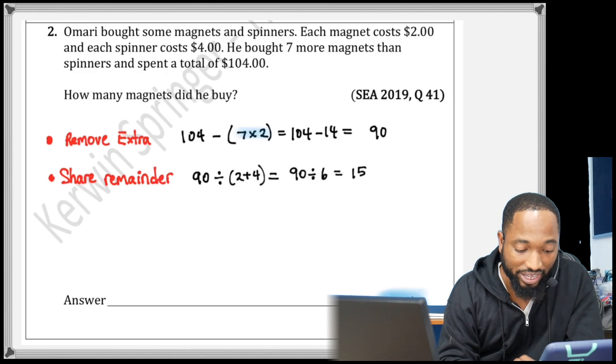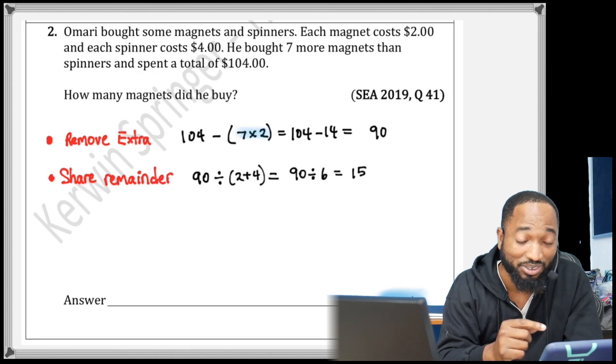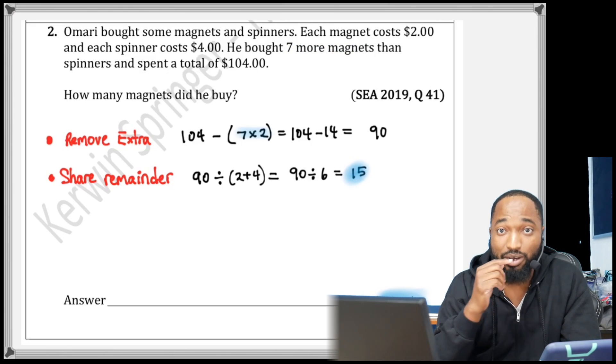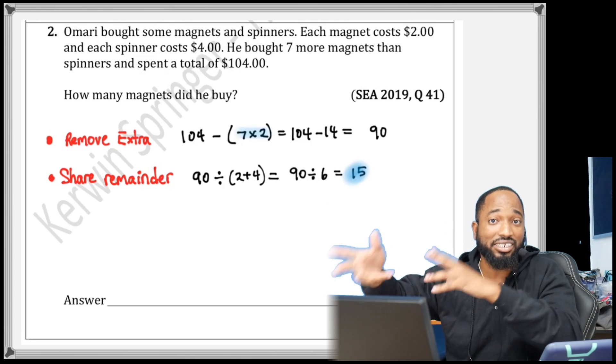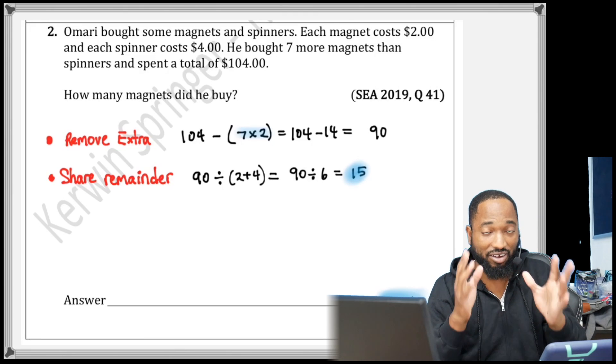15 of each. But what do you do in the end? If they wanted to come back to the one with the extra, magnets, don't forget to add back the extra. And how much extra magnets we had? 7 more magnets.